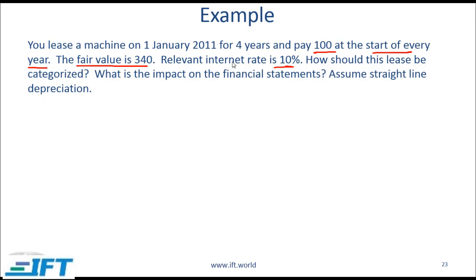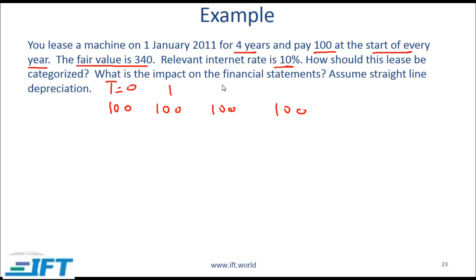The machine is being leased for 4 years and you pay 100 at the start of every year. So what's the present value? You have payments of 100, 100, 100, and 100 — these are your 4 payments at t equal to 0, 1, 2, and 3.